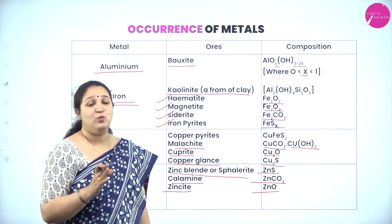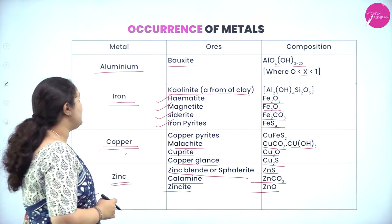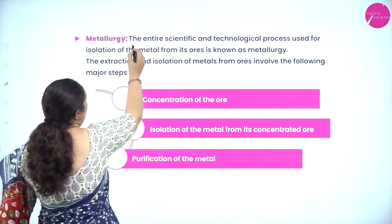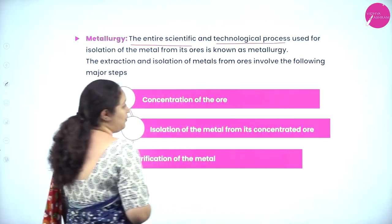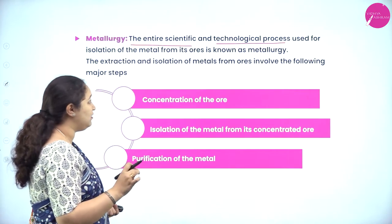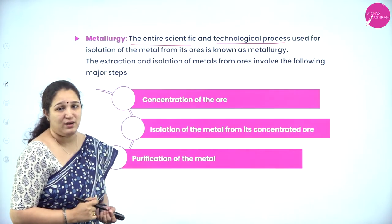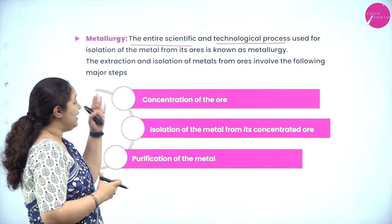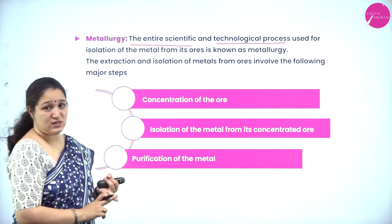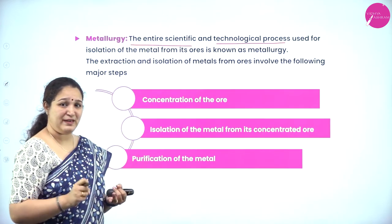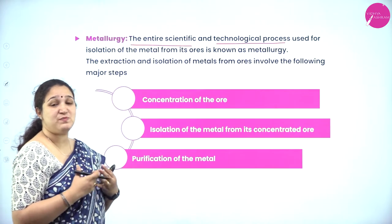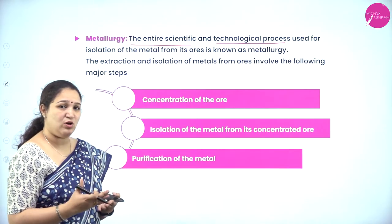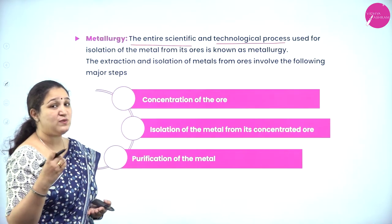Next, what is metallurgy? The entire scientific and technological process used for isolation of the metal from its ore is called metallurgy. It uses all scientific and technological processes for extraction of the metal from its ore — that is, using all the principles based on chemistry.